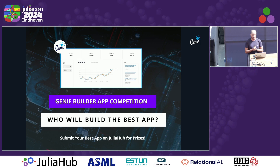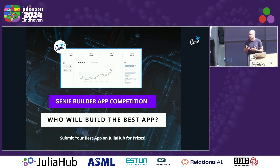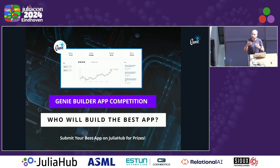As our last piece of news, we are running a Genie competition this summer where you can win cash prizes and credits on JuliaHub. To enter, you just need to create a new Genie app and submit it to JuliaHub. For full details, check out our website at genieframework.com and visit our blog.